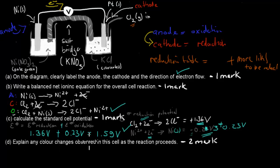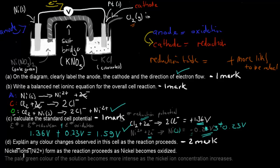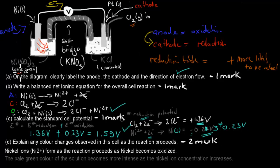For Part D, explain any color changes observed in the cell as the reaction proceeds. Nickel ions form as nickel becomes oxidized at the anode — electrons leave via the wire and Ni²⁺ ions drop into the solution. As more Ni²⁺ ions accumulate, the pale green color of the nickel solution becomes more intense. One mark is for stating that nickel ions form as nickel is oxidized; the second mark is for connecting the increasing ion concentration to the color change from pale green to intense green.